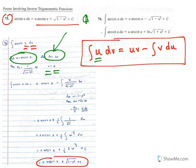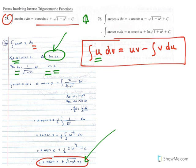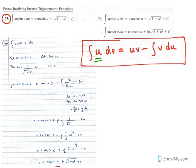No need to write the constant of integration here; we'll have one at the very end. To find du, we already have u = arcsin(x), so to find the differential of u, you find the derivative of arcsin(x), which is 1 over the square root of 1 minus x squared, and multiply by the differential of x.